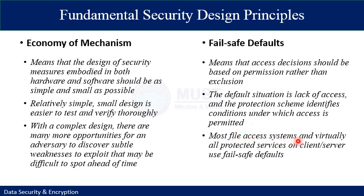Most file access systems and virtually all protected client-server systems use fail-safe defaults. This approach provides a better failure mode than the alternative where default is to permit access — if you allow access by default, there are more chances that a user or process can attack your system. A design mistake in a permission-granting mechanism tends to fail by refusing permission — a safe situation quickly detected. A design mistake in a mechanism that explicitly excludes access tends to fail by allowing access, a failure that may go unnoticed in normal use.